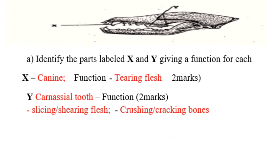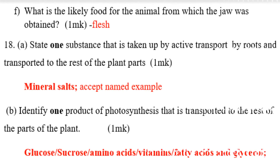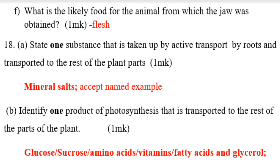The next question: what is the likely food for the animal from which the jaw was obtained? That animal takes flesh, because of the dentition formula that we have seen.